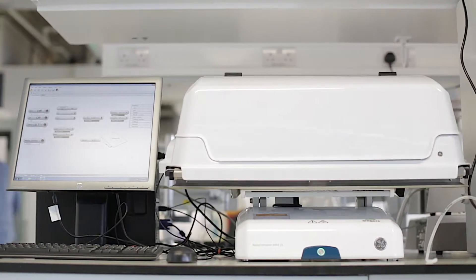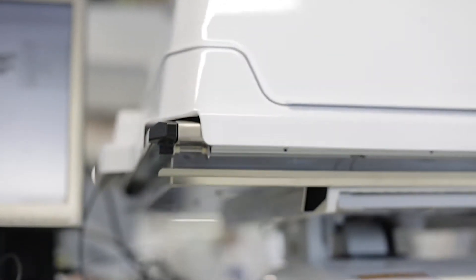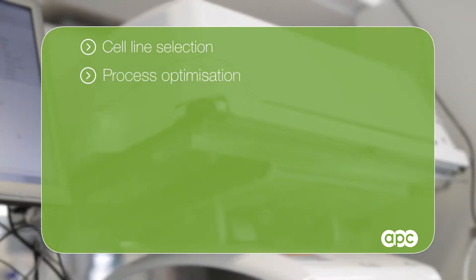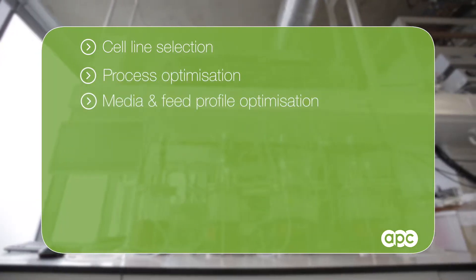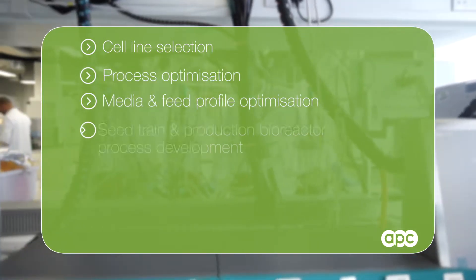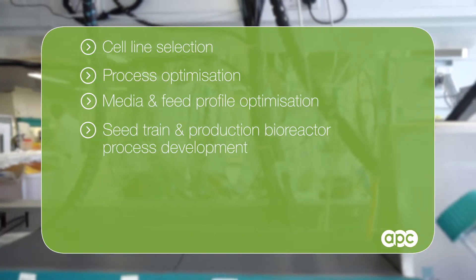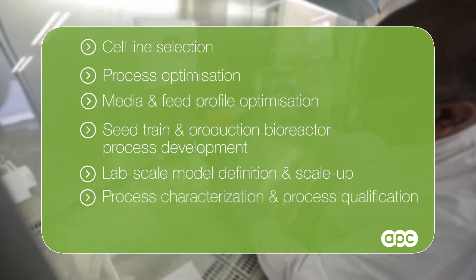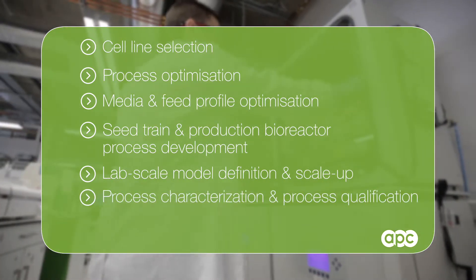Our upstream process development services focus on a number of key areas. These include cell line selection, process optimization, media and feed profile optimization, seed train and production bioreactor process development, lab scale model definition and scale-up, process characterization, and process qualification.